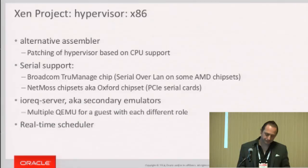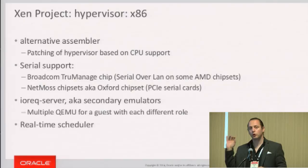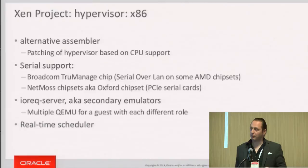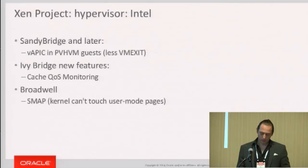Another feature is multi-queue support, which allows you to have multiple QEMU instances or variations for one guest — you can scale it out and make more QEMU instances for certain guests to handle different memory errors. Lastly, real-time scheduling: the current one in Xen is a little old and doesn't work that well. There have been two sets of patches working on it, and I hope very much to have a real-time scheduler in Xen 4.5.